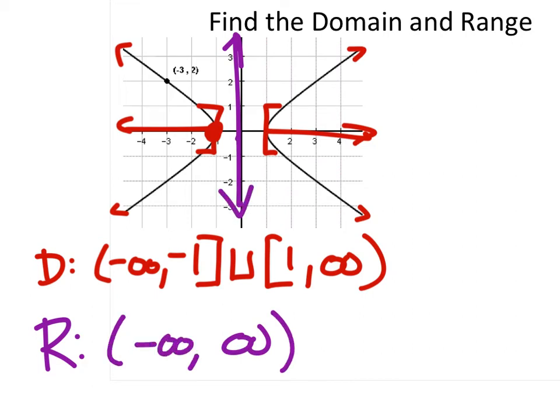So, infinity is never included because it's not actually a value. I only know one person that's counted to infinity. Does anyone know? Chuck Norris? He did it twice, man.